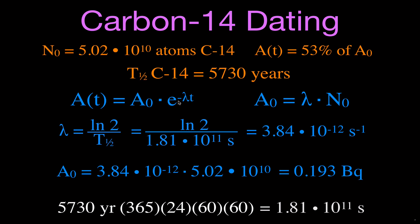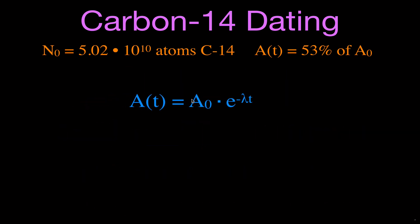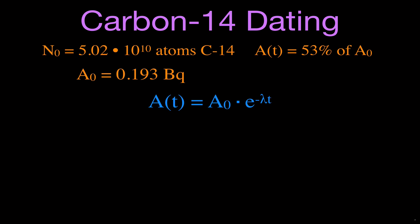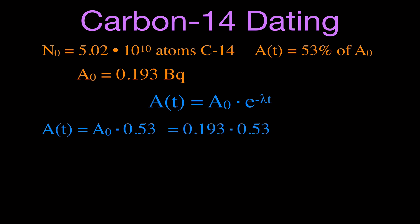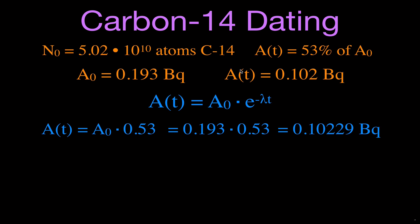On the next slide, we're going to use the main equation now that we know A₀. We know that Aₜ is 53% of A₀, so we take A₀ × 0.53: 0.193 × 0.53 gives us an activity at time T of 0.10229 becquerels. Now we have both A₀ and Aₜ, and we know the decay constant from the previous slide, so we can solve for T.